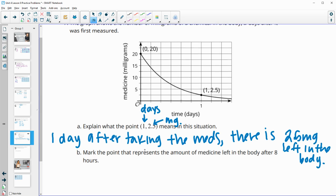Then it says mark a point that represents the amount of medicine left in the body after eight hours. So remember that this is one day, and one day is equal to 24 hours. So we want to figure out where eight is. Let's figure out their scale. So this is one, two, three, four, five, six equal pieces here.